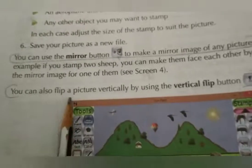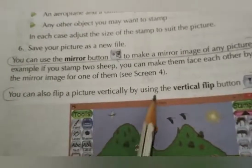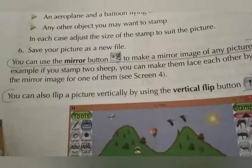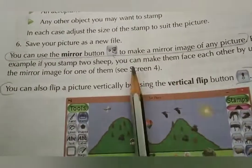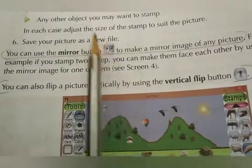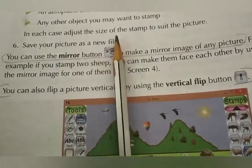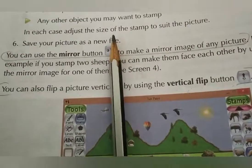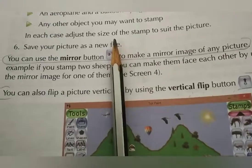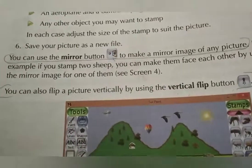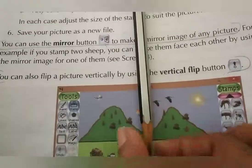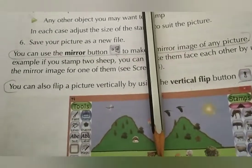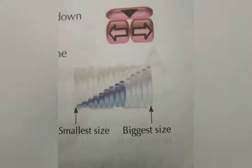The next one is the Vertical Flip button. You can flip a picture vertically using the Vertical Flip button. If you take a pencil as an image and select the Vertical Flip button, the pencil will turn upside down — that is how the Vertical Flip button works.